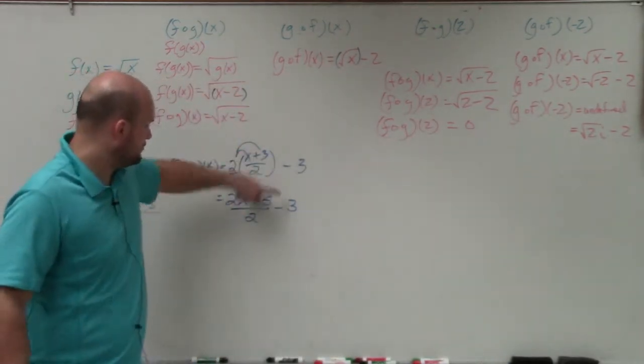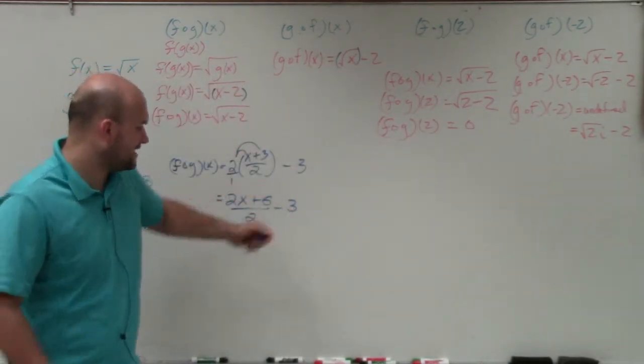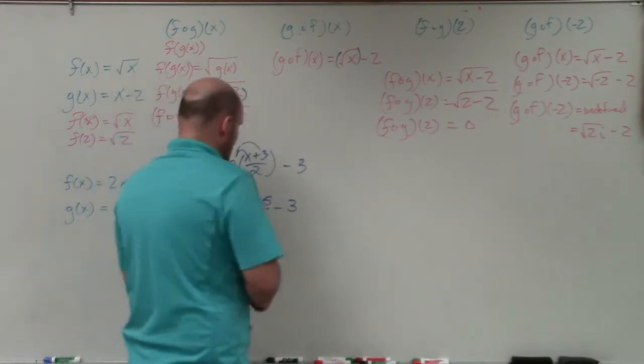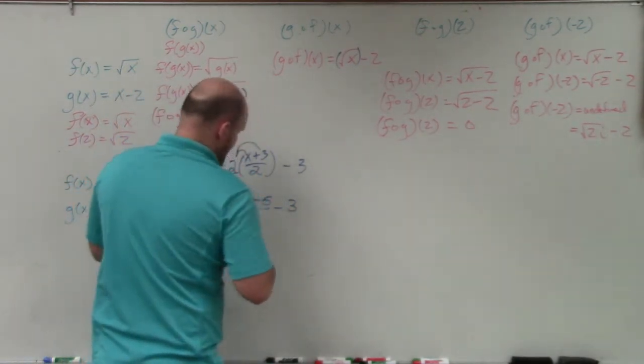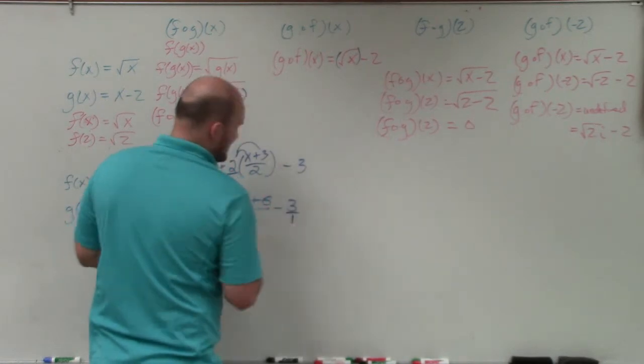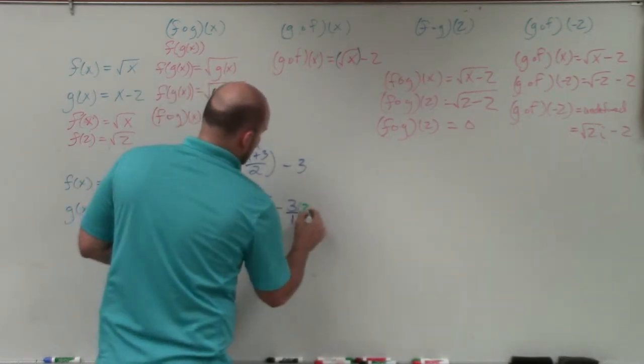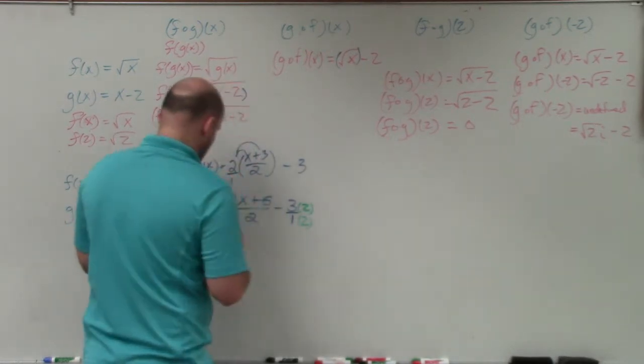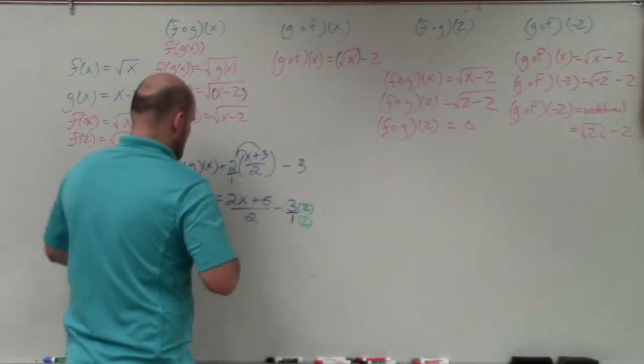Well, just like anything else, we should be able to combine these fractions. So I'll multiply by my common denominator here. So this is really 3 over 1, I'll rewrite that as a fraction, multiply that by 2 over 2.